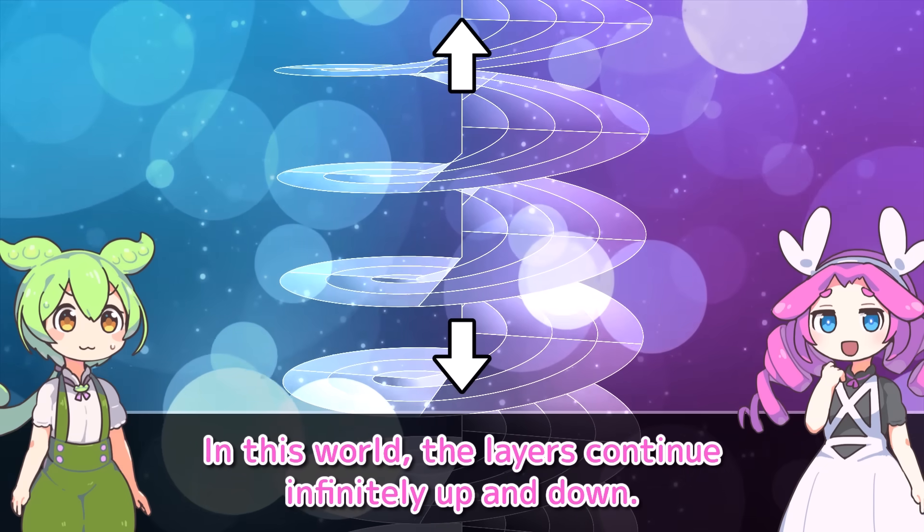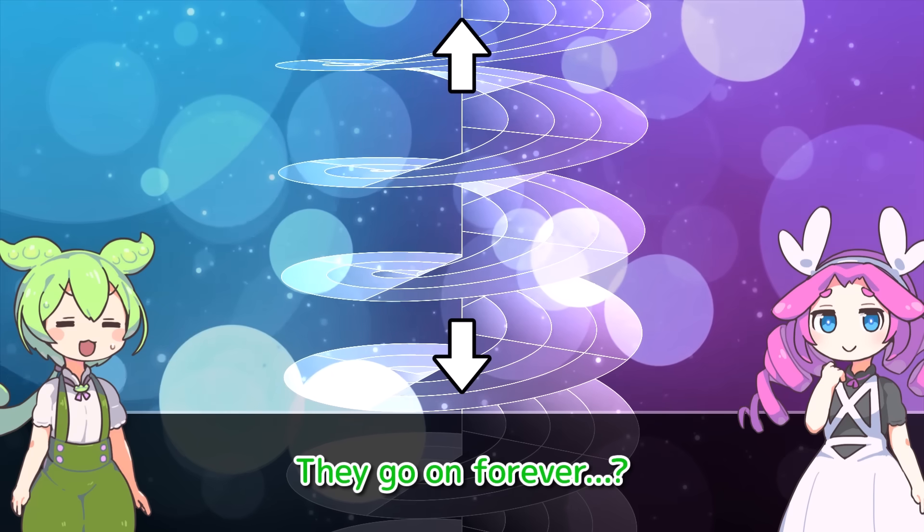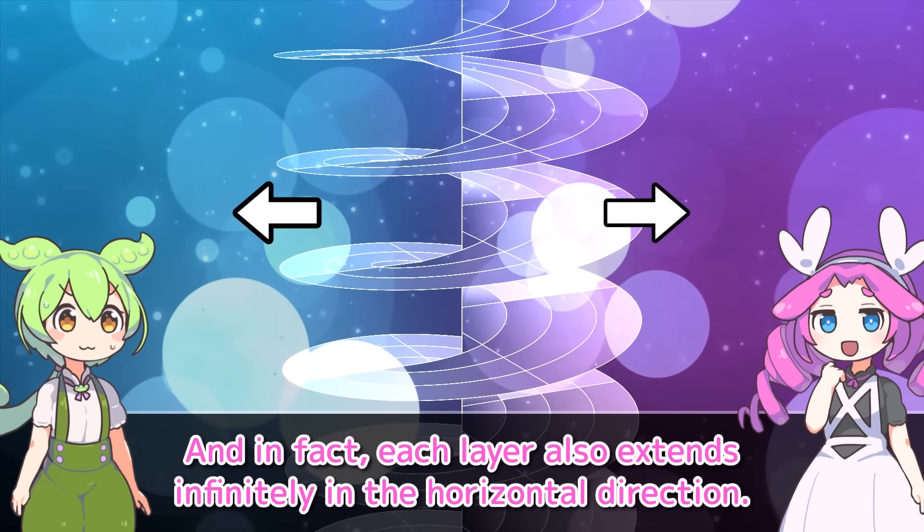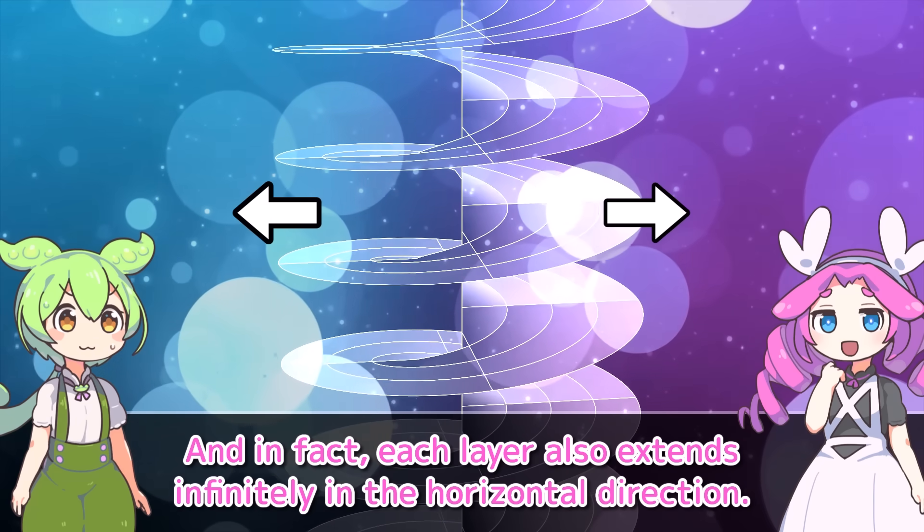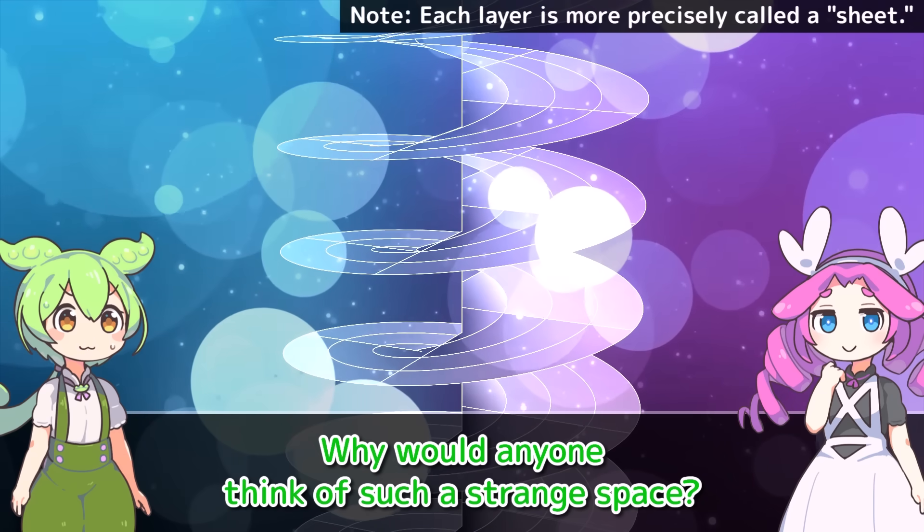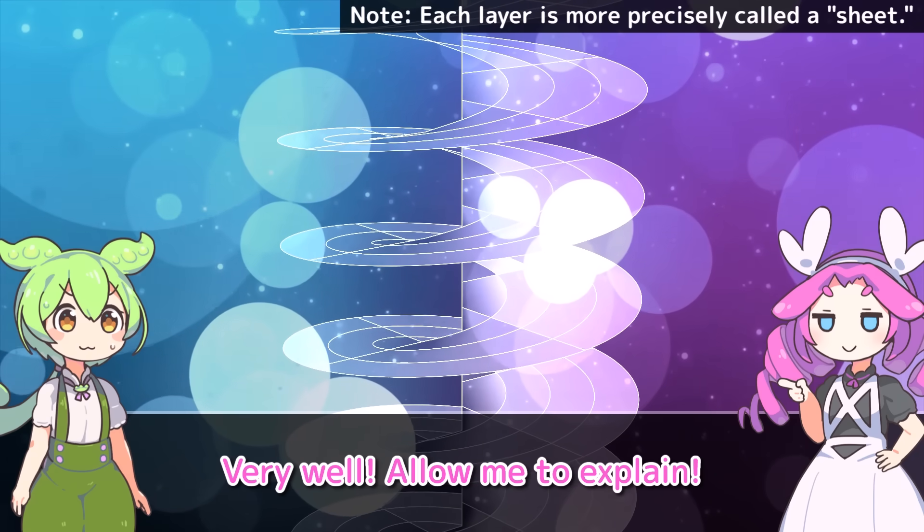In this world, the layers continue infinitely up and down. They go on forever? What are you even talking about? And in fact, each layer also extends infinitely in a horizontal direction. What do you mean? Why would anyone think of such a strange space? Very well, allow me to explain.